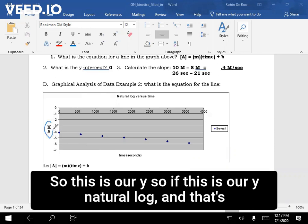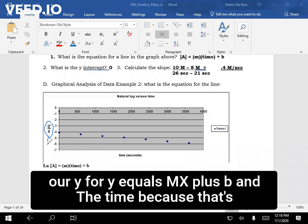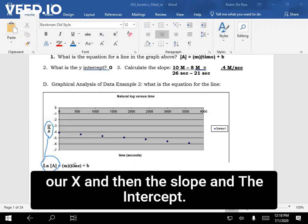So if this is our y, natural log, then that's our y for y equals mx plus b, and then the time, because that's our x, and then the slope, and then the intercept. So in this case, your y is natural log of A.